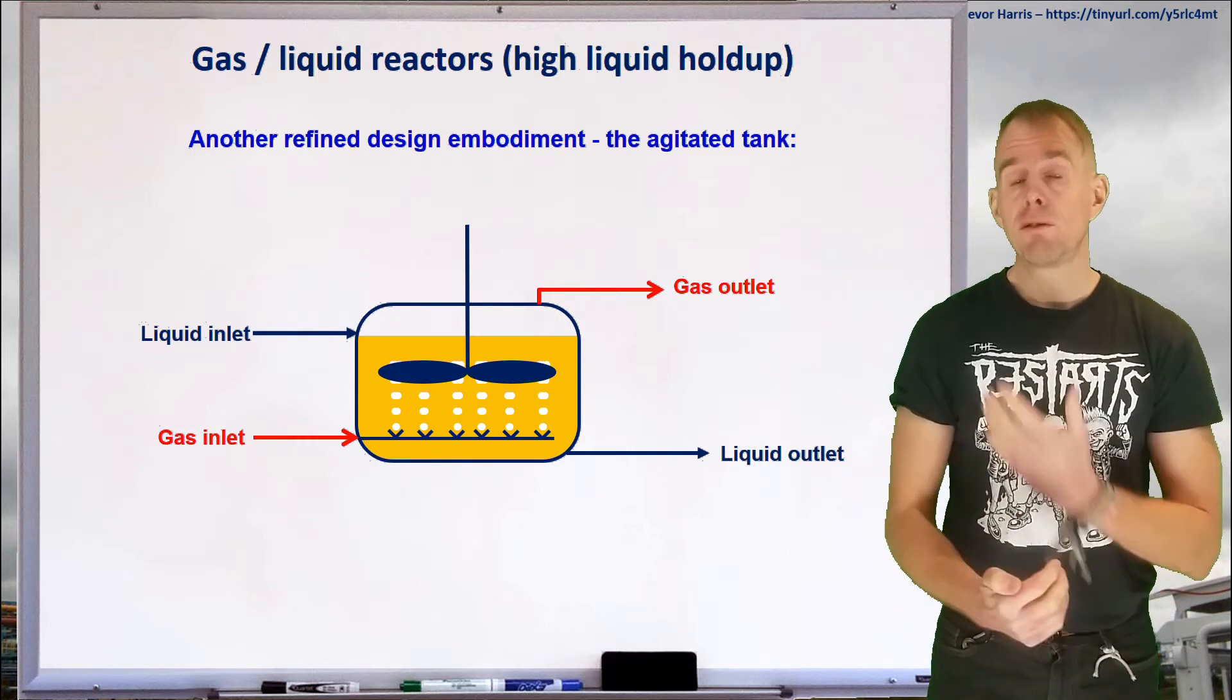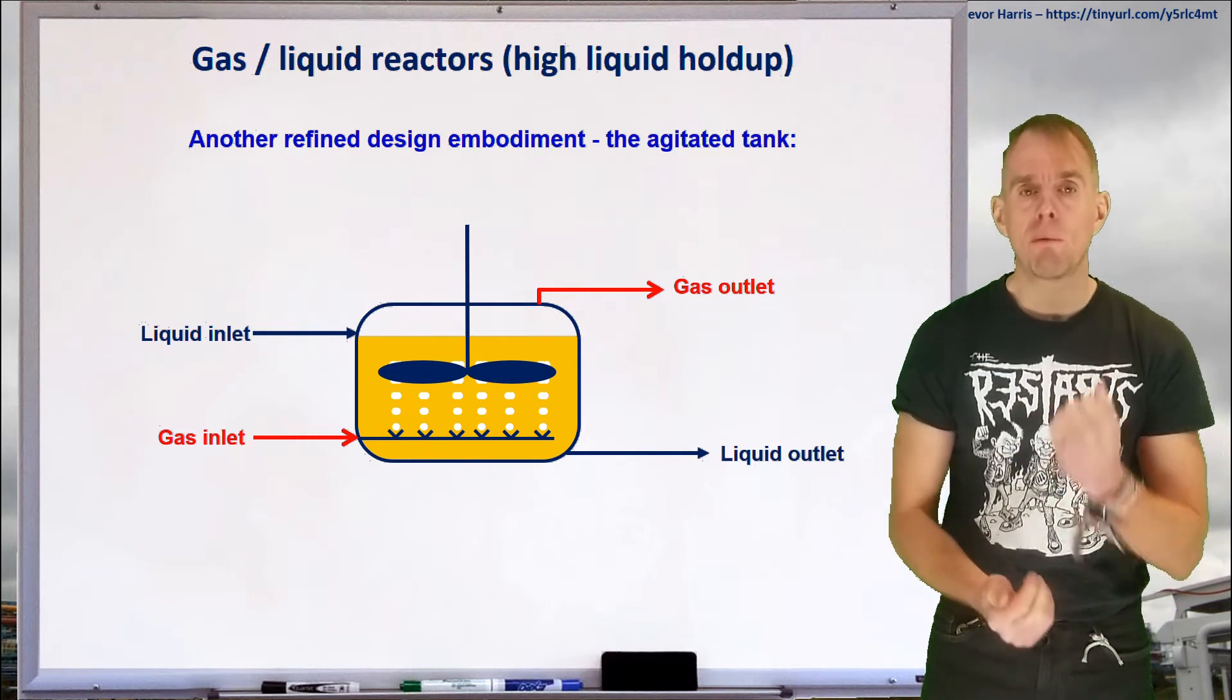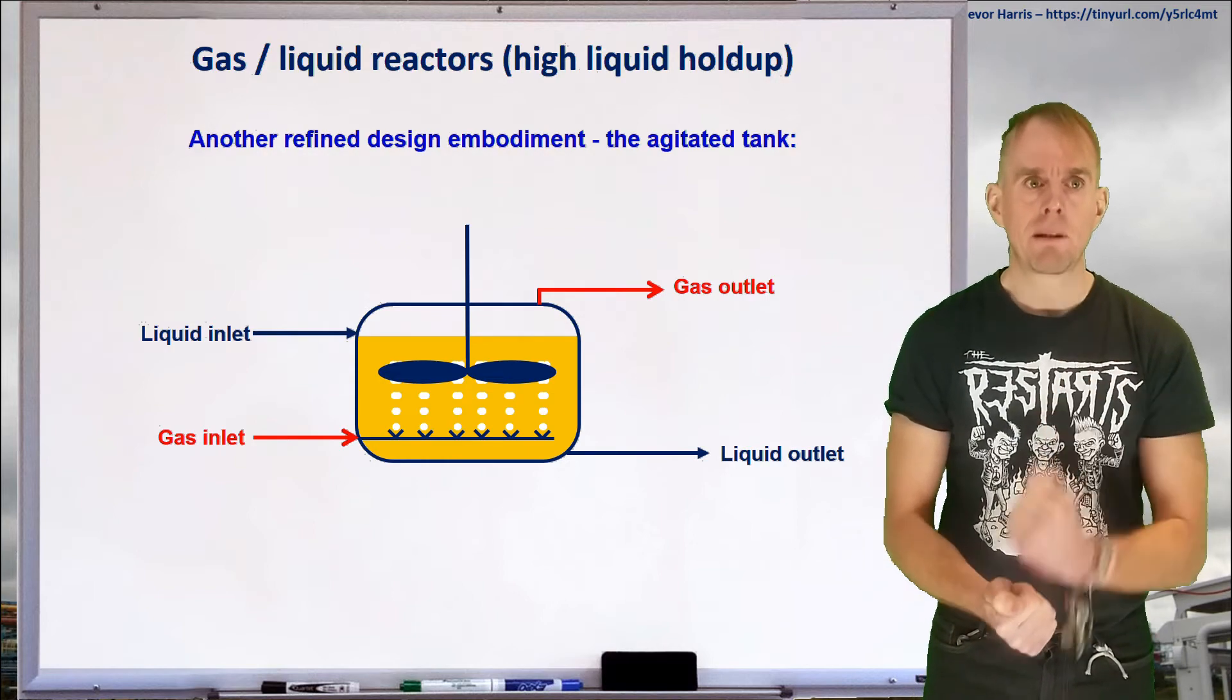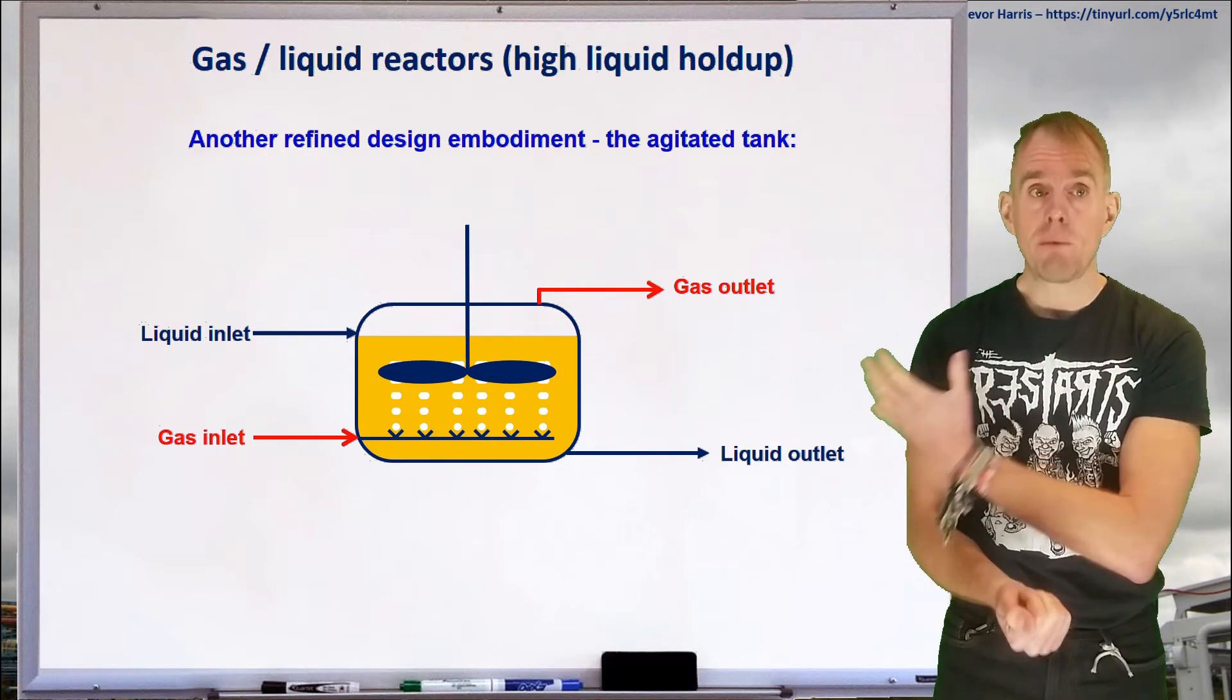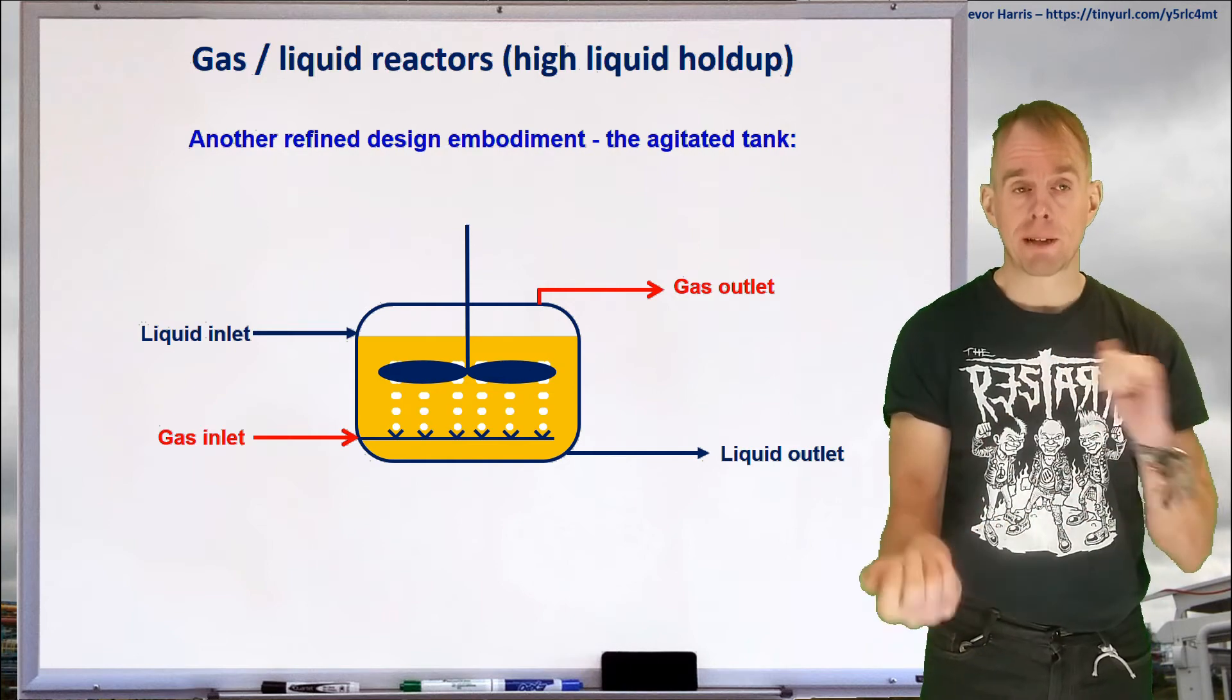On the minus side, however, you've now got a more complex system. And remember what we said at the outset, aim for simplicity. Simplicity is elegant. Here we've got more complexity because we've got a mechanical stirrer, some kind of mechanical seal around the shaft, and all the drive equipment. So motors and gearboxes and motor speed controllers for the agitator.